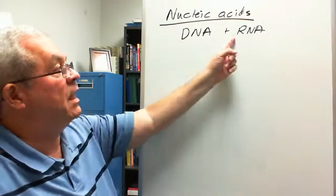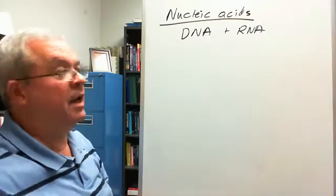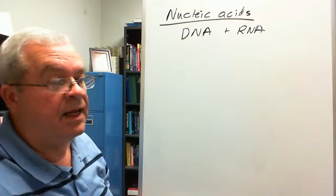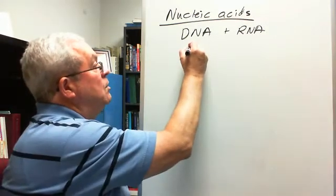One is abbreviated DNA, one is abbreviated RNA and they each have the same subunit. It's something called a what?